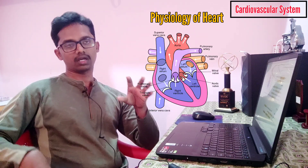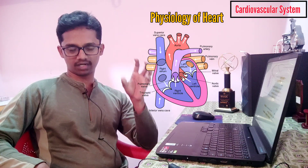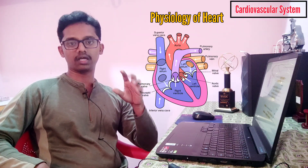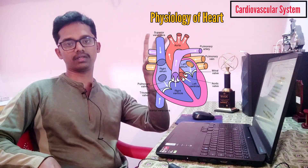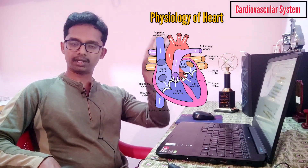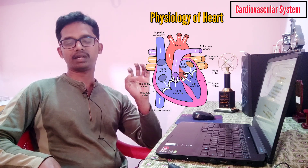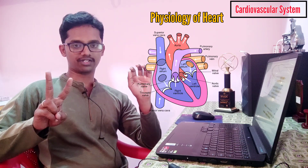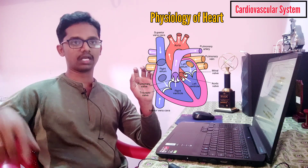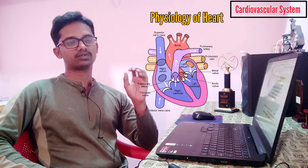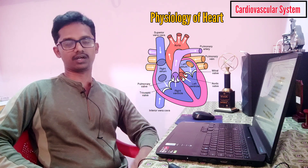So, in the physiology of the heart, there are two types of circulation. The circulation to the lungs for oxygenation is called pulmonary circulation. The circulation to all other body parts is called systemic circulation. These are the two types of blood circulation. This is all about the physiology of the heart.